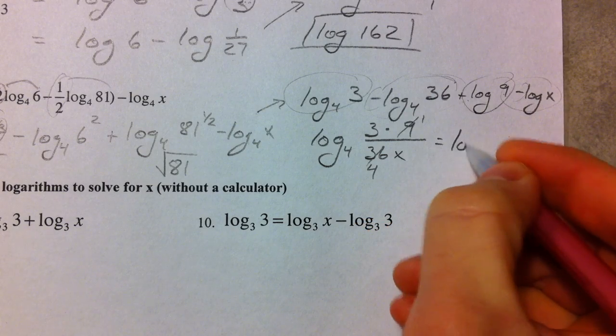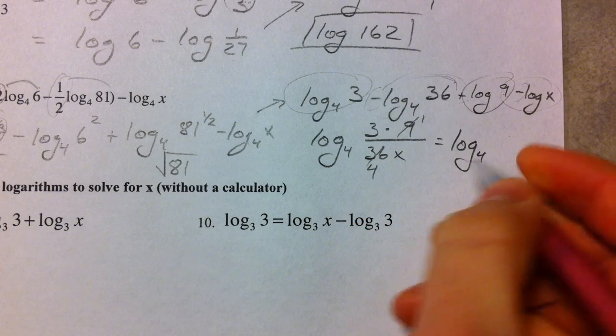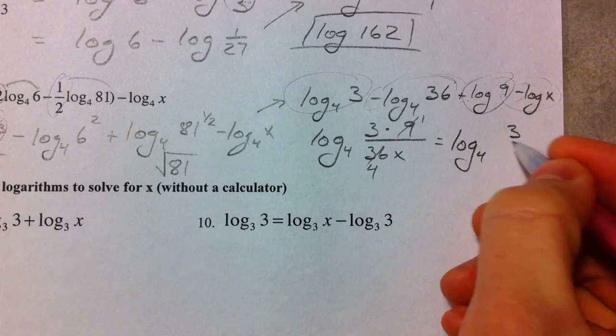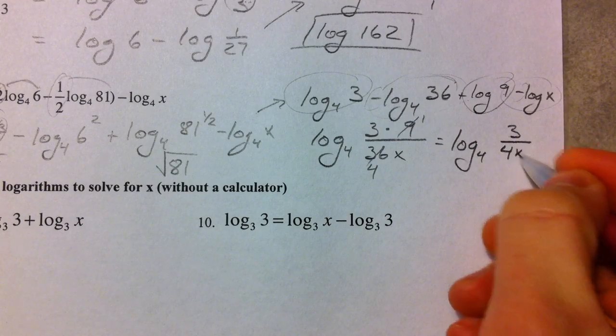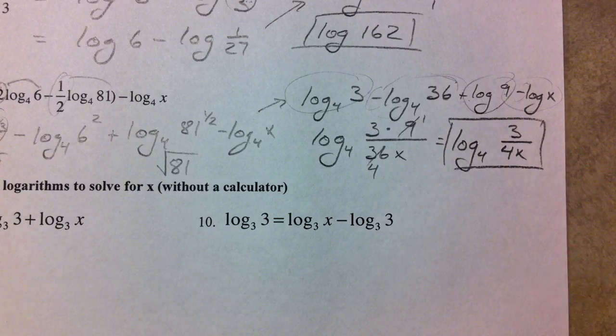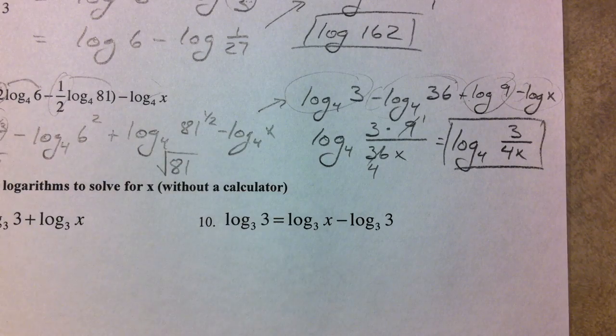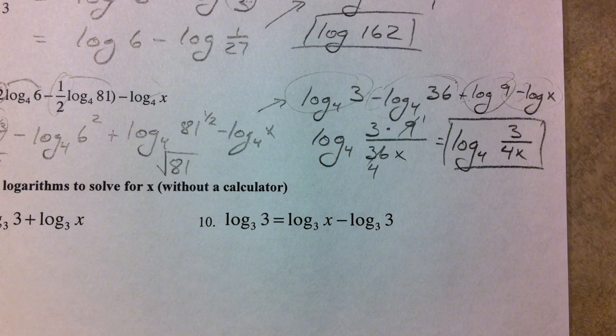So we get log base 4 of 3 over 4x, and that is the ultimate condensing of this whole monster of a problem.